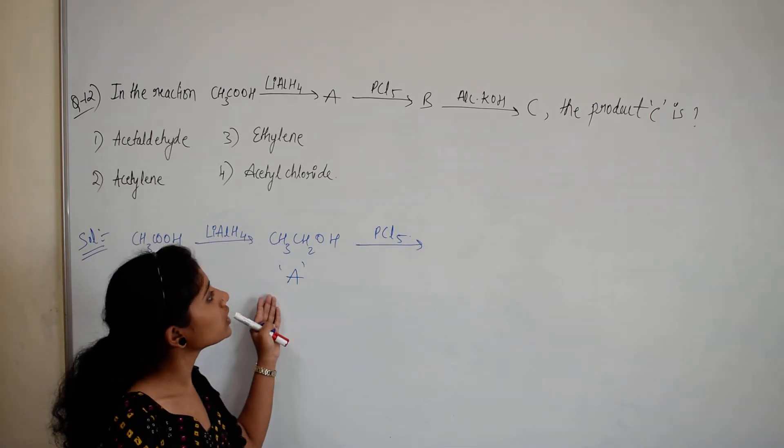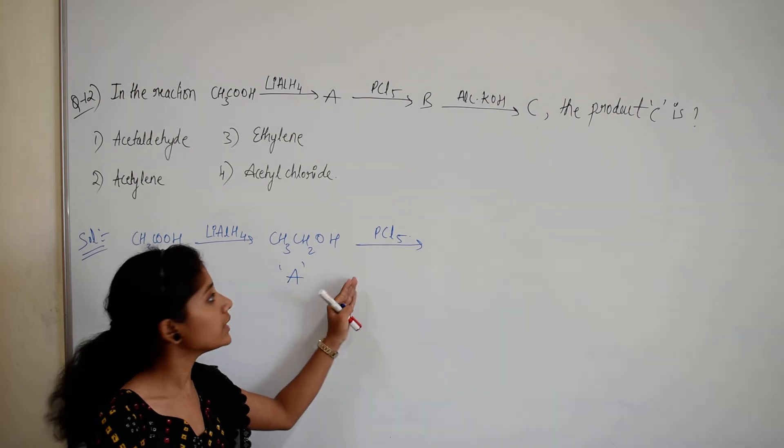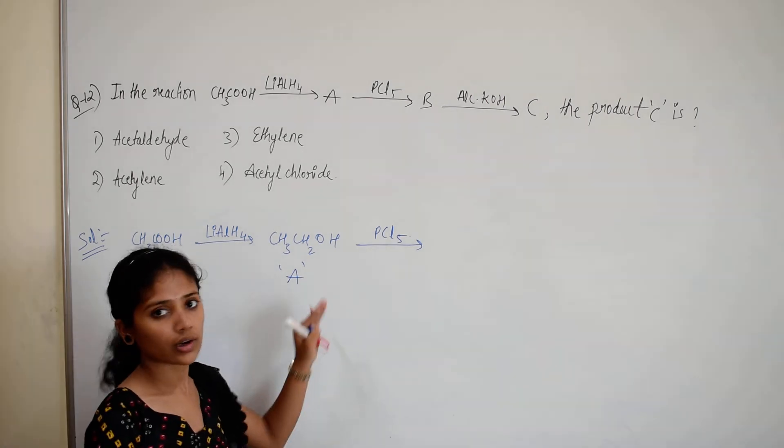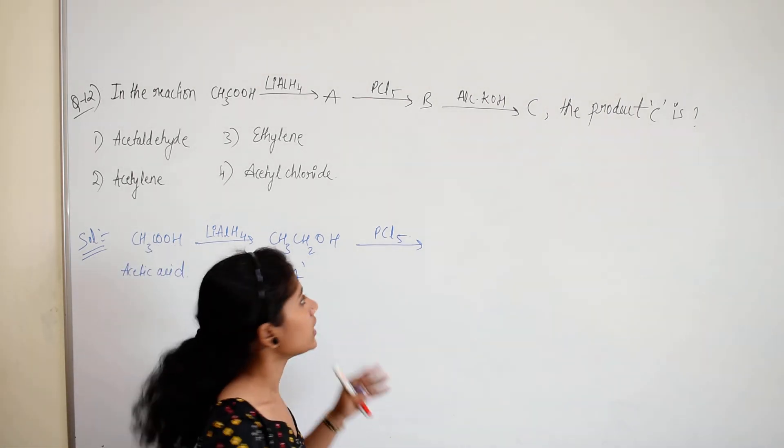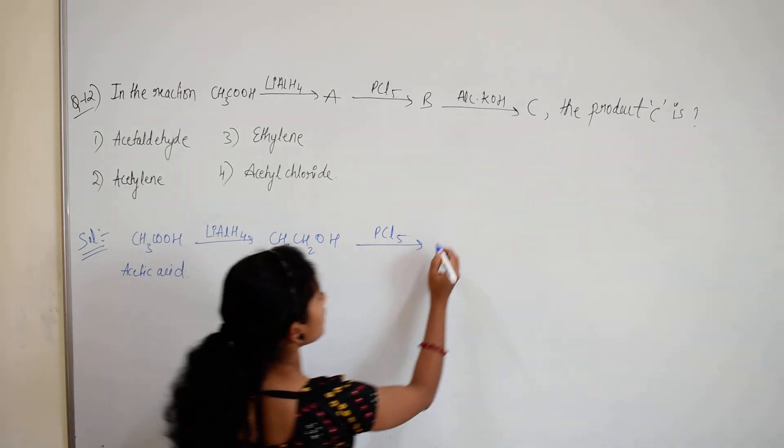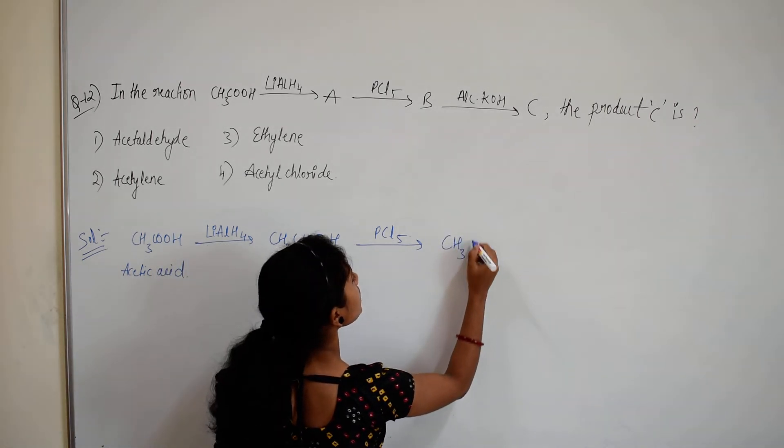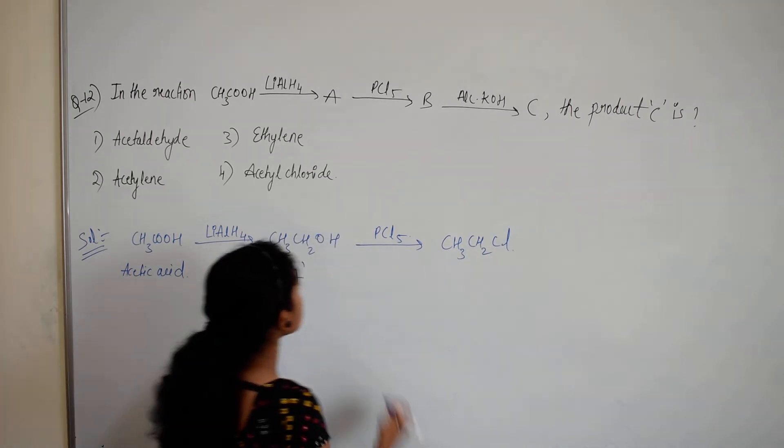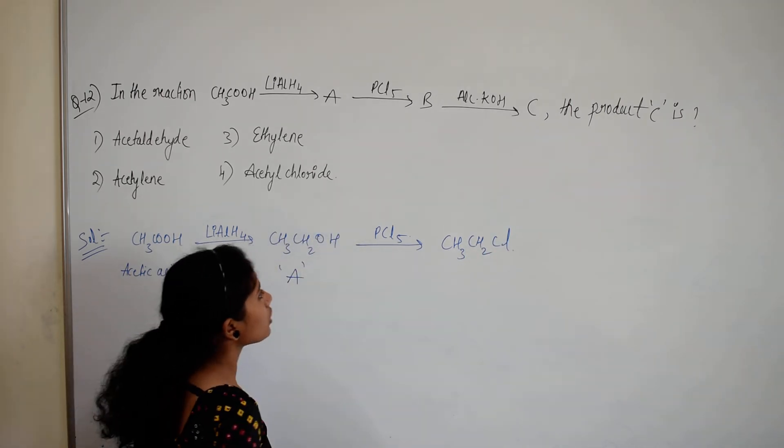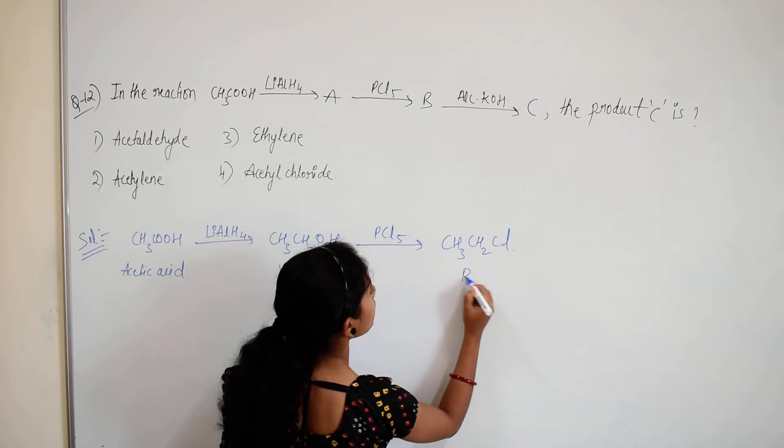So alcohol reaction with PCl5 will give alkyl chloride. That is CH3CH2Cl. This OH is replaced by chlorine. So this is our product B.